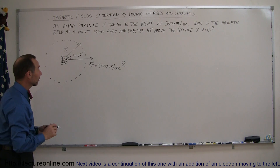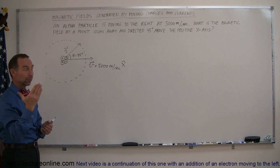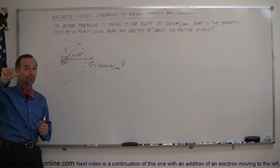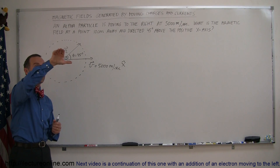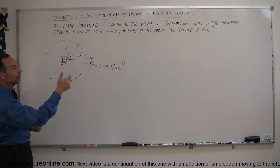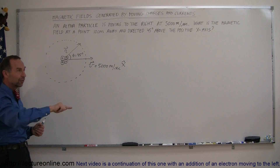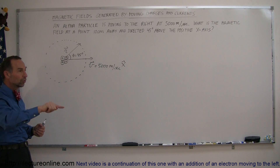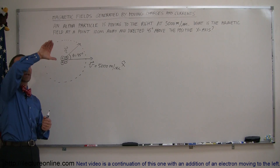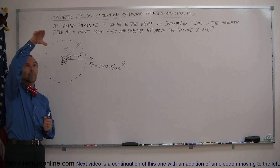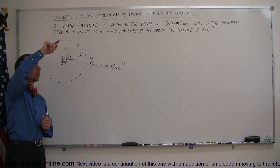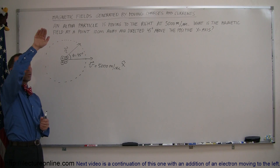To find the direction of the magnetic field is fairly straightforward. We use our right-hand rule because it's a positive charge that's moving. We point our thumb in the direction of the moving charge, and then our fingers curl in the direction of the B-field. You can see the magnetic field loops around the moving charge, and directly above the moving charge the B-field is coming out of the board.